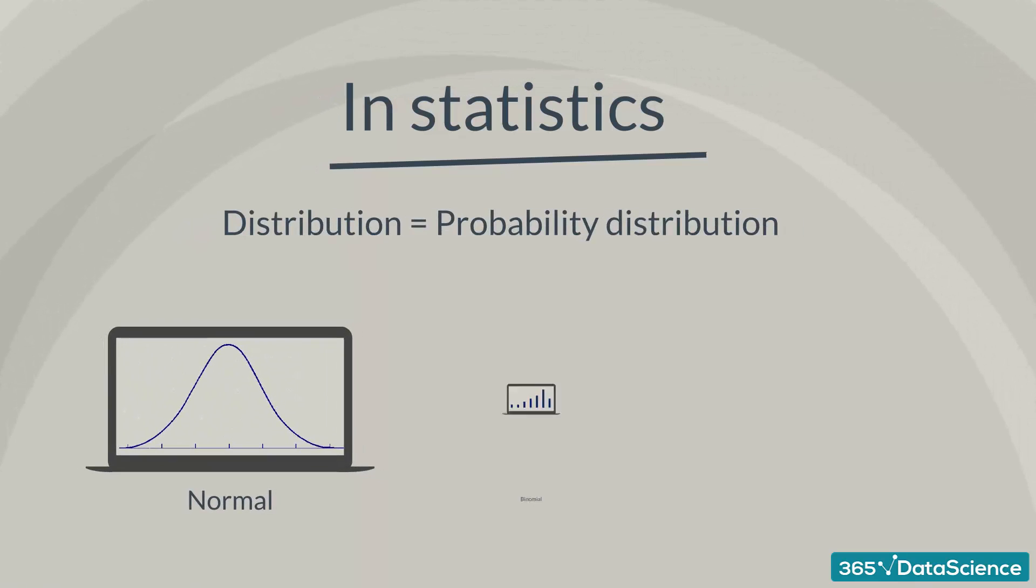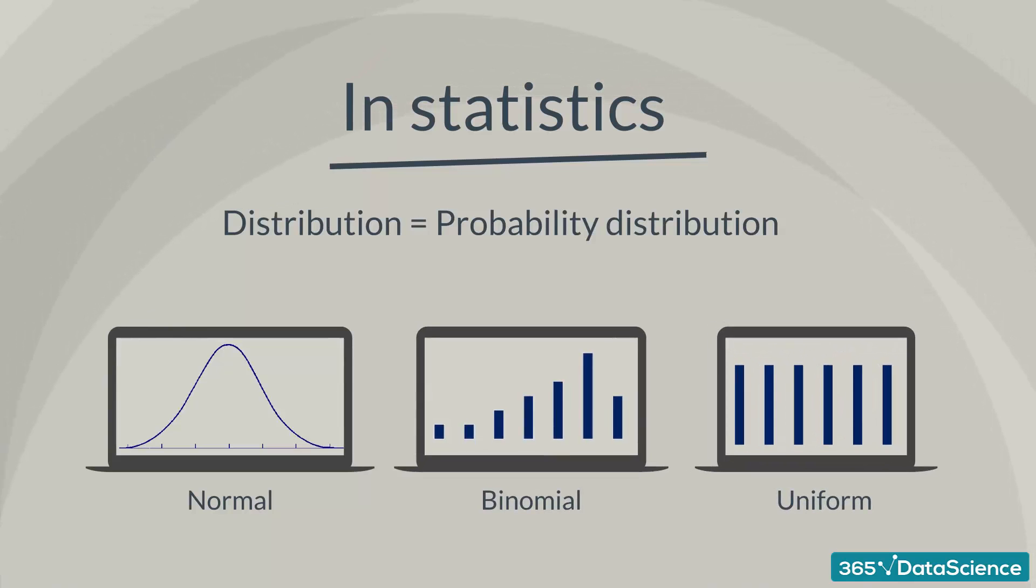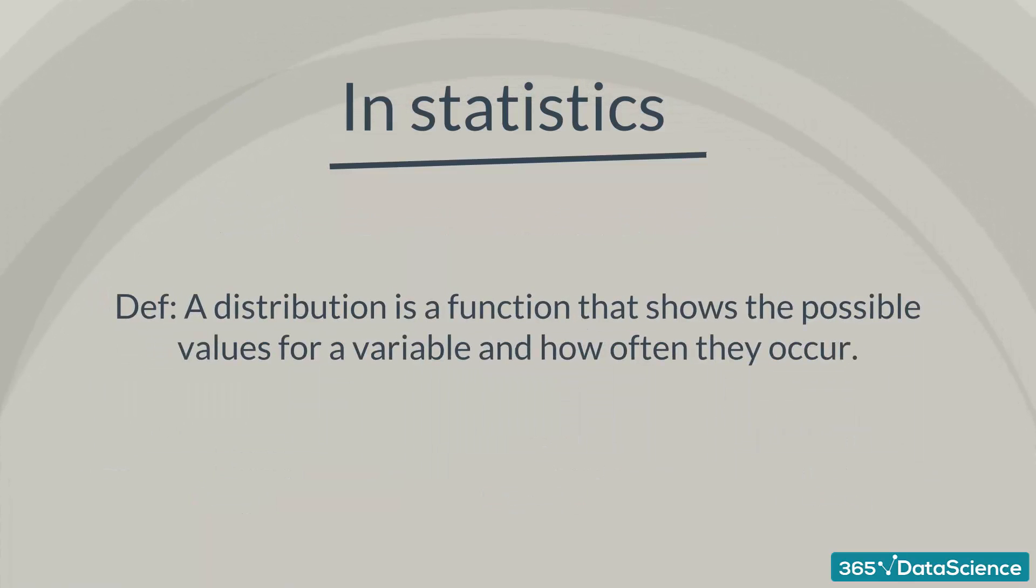Good examples are the normal distribution, the binomial distribution, and the uniform distribution. Alright, let's start with a definition. A distribution is a function that shows the possible values for a variable and how often they occur.